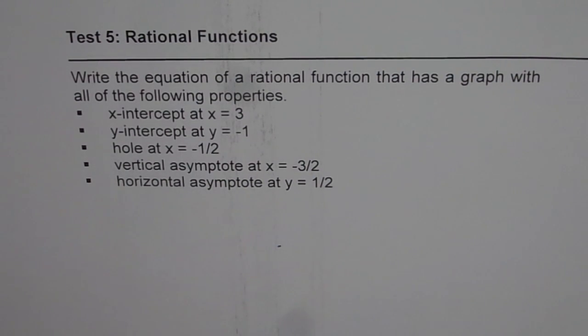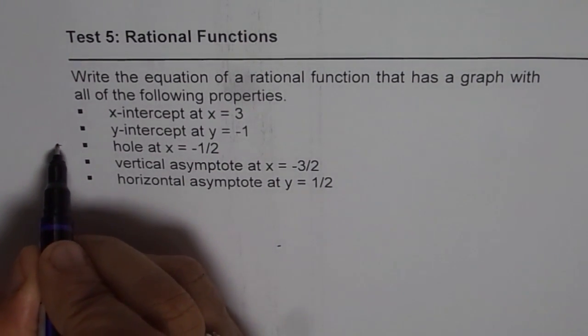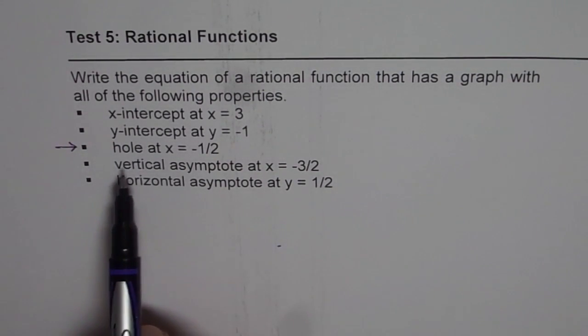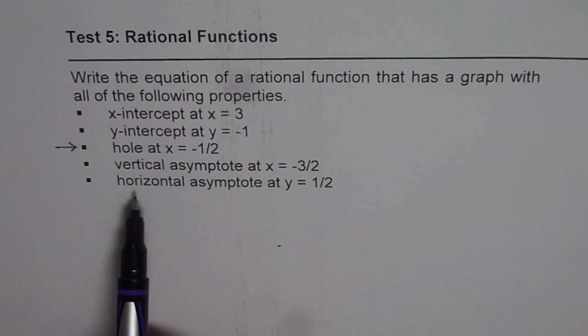Now, whenever you have this type of a function, then I will prefer to start from the hole itself, and then find an equation for vertical asymptote and horizontal asymptote, and then get back to the intercepts.